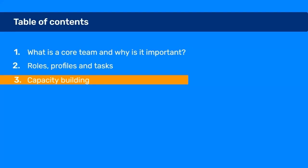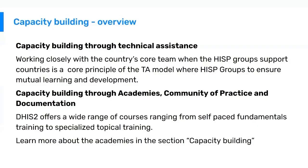I will talk about different approaches to capacity building. There are two main ways that the core team can build their capacity. One is through technical assistance — when the HISP groups are working with the country to solve issues or support on certain topics, they should always involve the country core team. You learn through apprenticeship or working side by side with other experts. The second approach is capacity building through more formal approaches, such as academies, the community of practice, and documentation. DHIS2 offers a wide range of courses, ranging from self-paced fundamental courses to specialized topical training. We have a community of practice, which is a large user forum where you can read what other users have problems with, how they've solved it, and you can also reach out for help there.